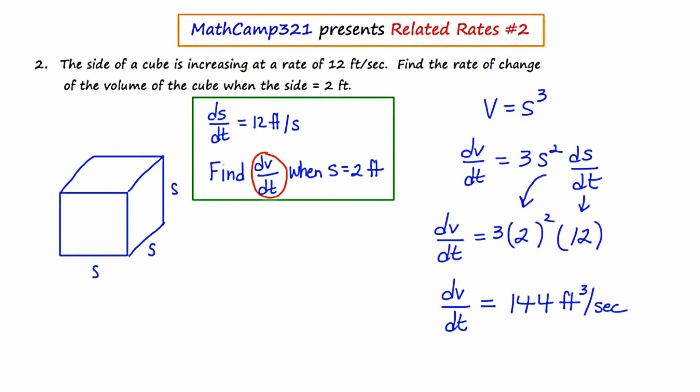So one method would be to actually use the units in the calculation. The other way would be just to use common sense and say, hey, we're looking for the change in volume. So this has to be cubic units. So I'm going to go ahead and box this final answer, 144 cubic feet per second.